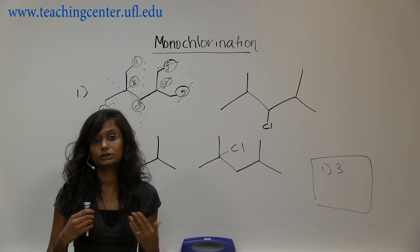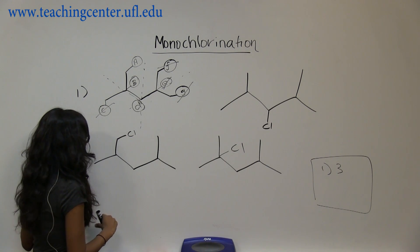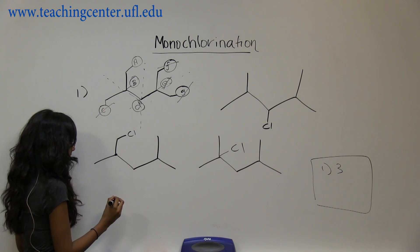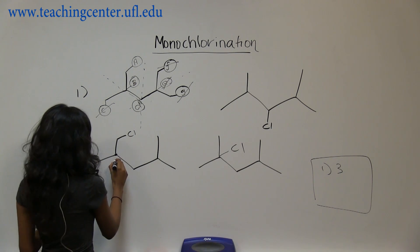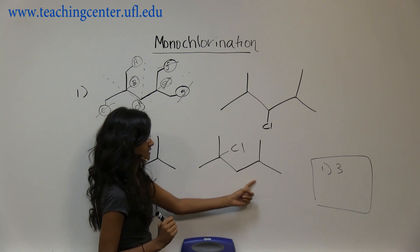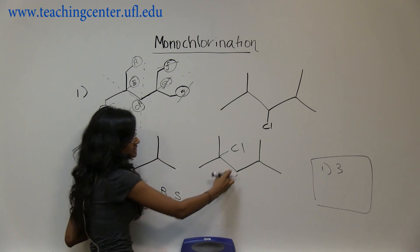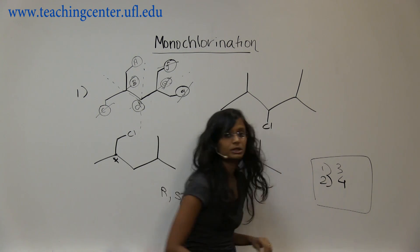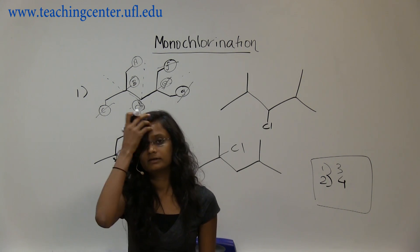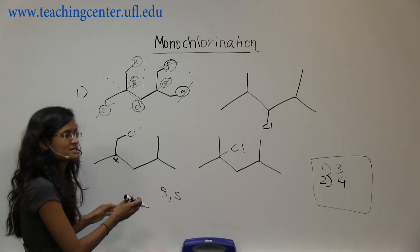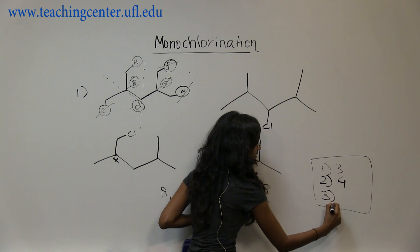Then you have to decide how many products including the stereoisomers. In that case, you go back to your molecules and see which ones are chiral. One of the products has a chiral carbon, so it gives R and S — that's two stereoisomers. The others have nothing chiral. So products including stereoisomers is four. And how many chiral products? We have two — one R and one S — so the answer for number three is two.